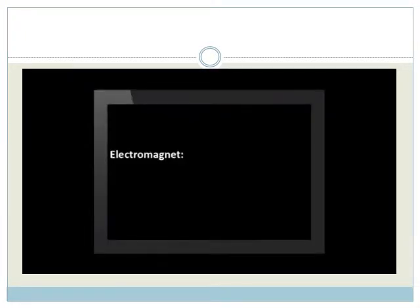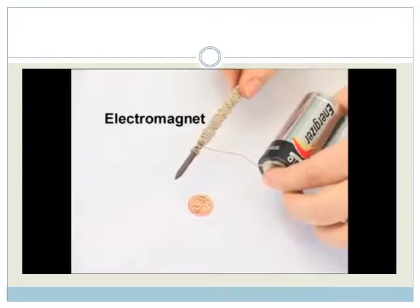To make an electromagnet, we use a cell or battery, wire, and a nail to wrap the wire around.